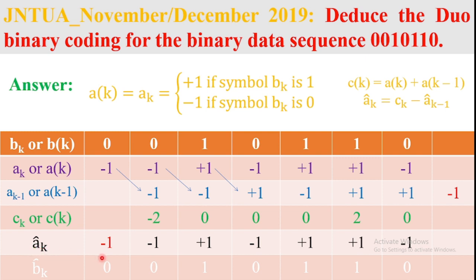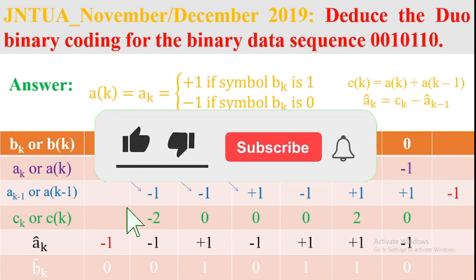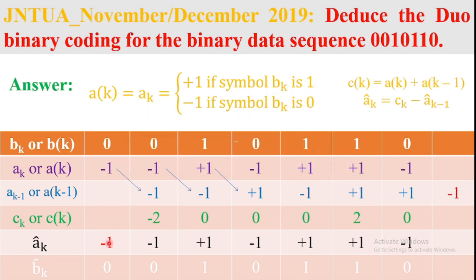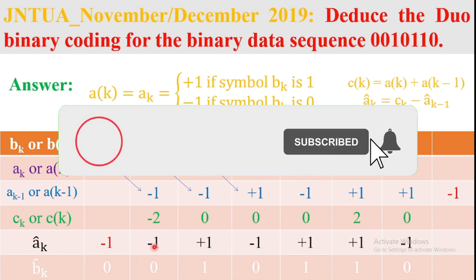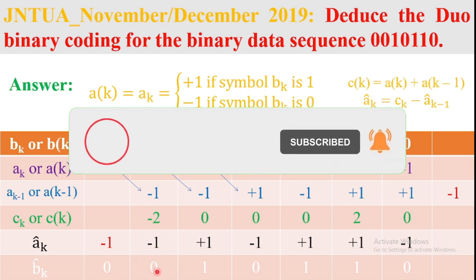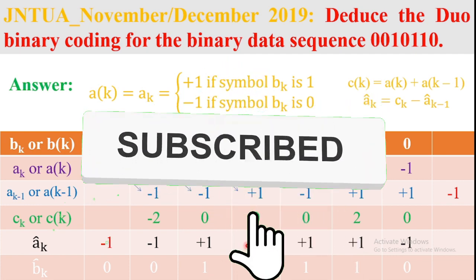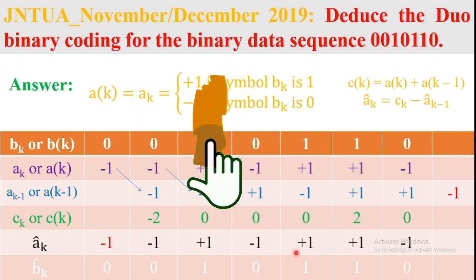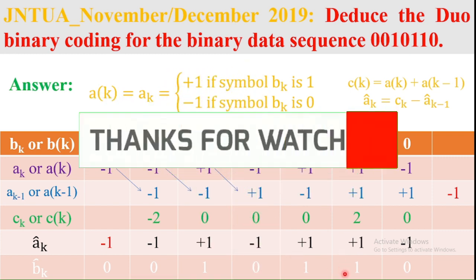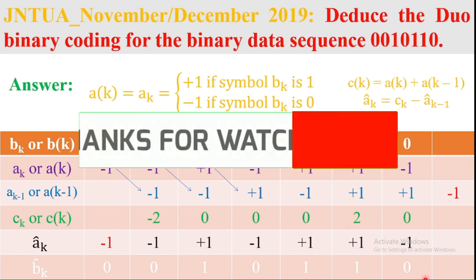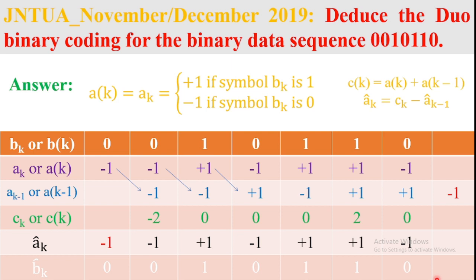After that, we convert the detected signal back to binary. Using the rule: if a(k) = -1 it is binary symbol 0, and if a(k) = +1 it is binary symbol 1. So: -1 → 0, -1 → 0, +1 → 1, -1 → 0, +1 → 1, +1 → 1, -1 → 0. This completes the example of Duo binary signaling.